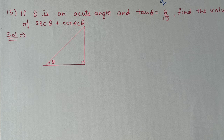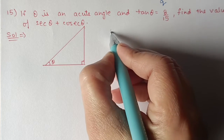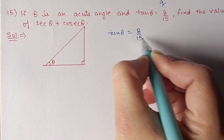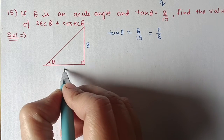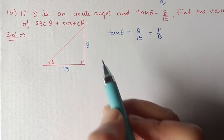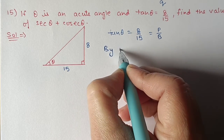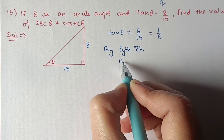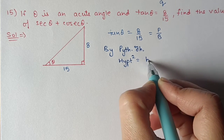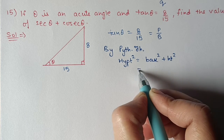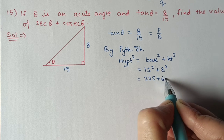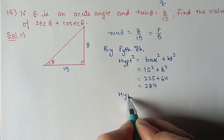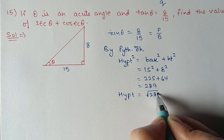Question 15: if θ is an acute angle and tan θ equals 8 upon 15, find the value of sec θ plus cosec θ. tan θ is given as 8 upon 15 and tan θ is perpendicular by base, so perpendicular is 8 and base is 15. By Pythagoras theorem: hypotenuse square equals base square plus height square. Base is 15 and height is 8: 225 plus 64 equals 289, so hypotenuse equals root of 289, which is 17 units.